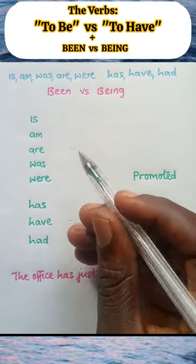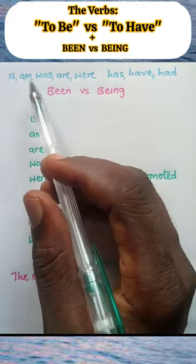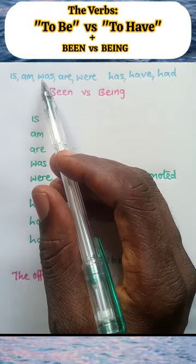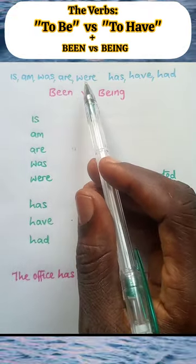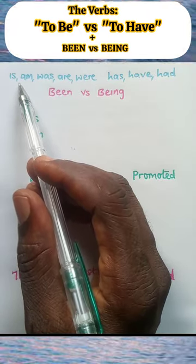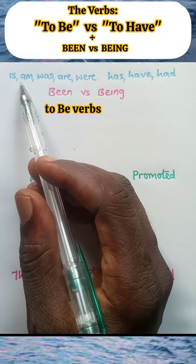Take a look at these three sets of verbs. The first set consists of is, am, are, was, were. These are primary auxiliary verbs. They belong to the category known as the verbs to be.